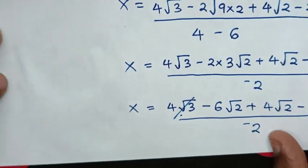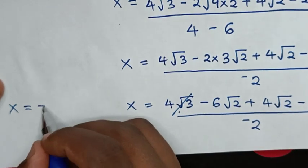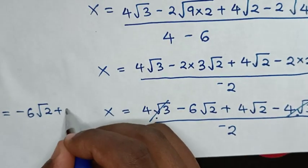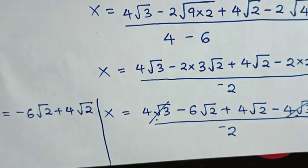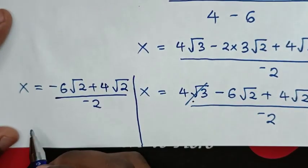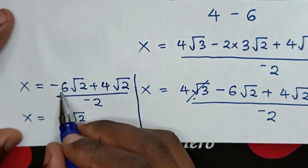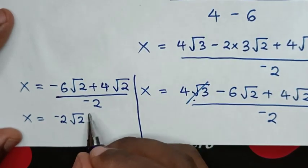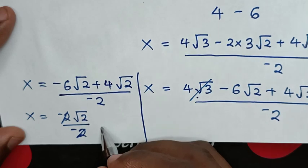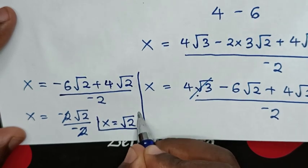Our equation will be x is equal to negative 6 square root of 2 plus 4 square root of 2, over negative 2. Negative 6 plus 4 is negative 2, so it is negative 2 square root of 2 over negative 2. Simplifying, the negative 2 cancels. Therefore the value of x is equal to square root of 2. So this is the final answer for the value of x.